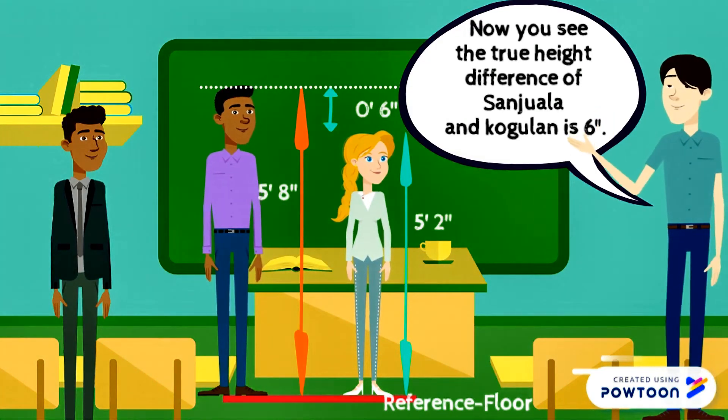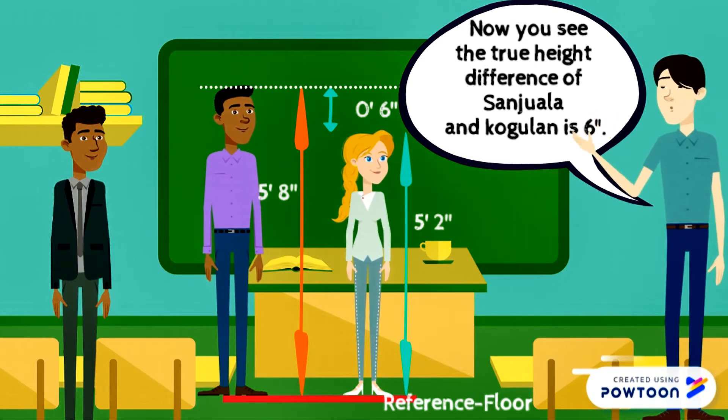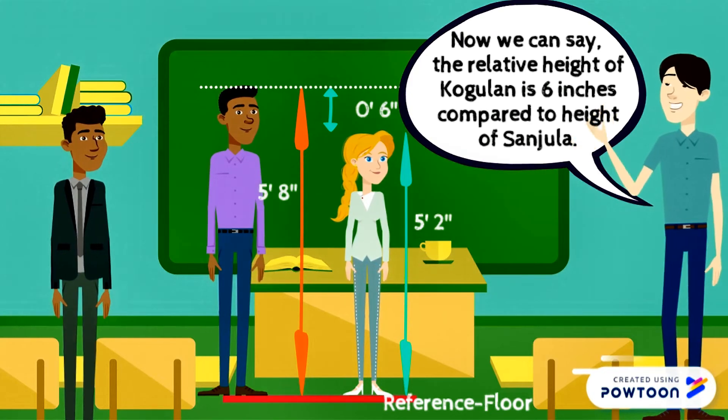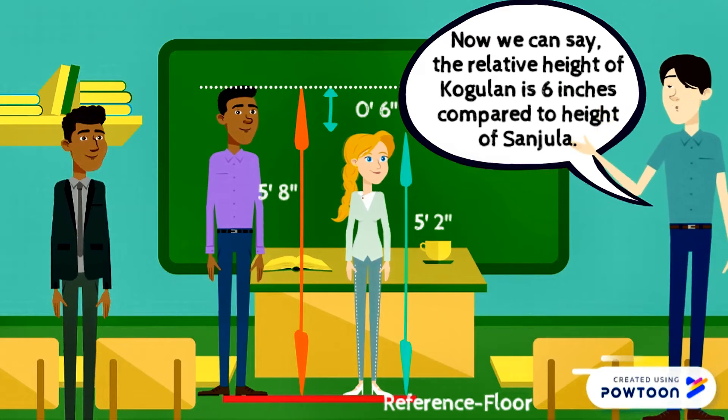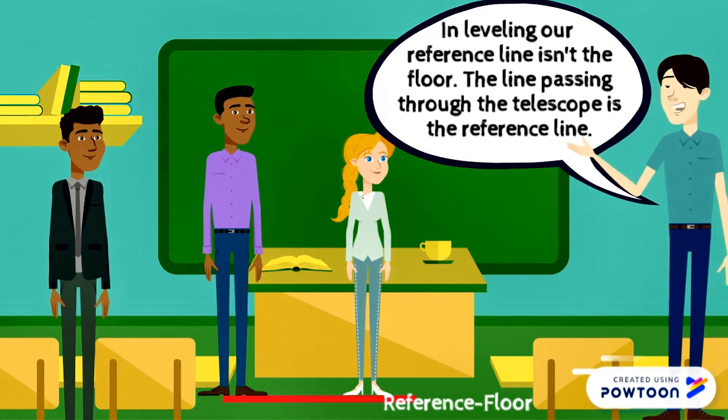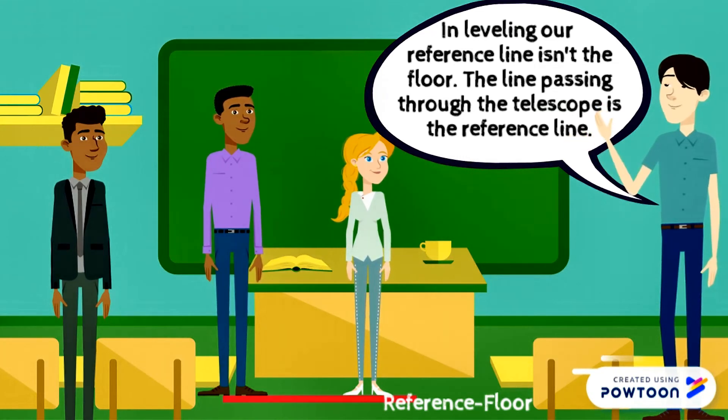Now you see, the true height difference of Sanjula and Kogulan is 6 inches. The true height difference was measured referred to the floor since it is a horizontal surface. Now we can say the relative height of Kogulan is 6 inches compared to the height of Sanjula. In leveling, our reference line is in the horizontal floor. The line passing through the telescope is the reference line.